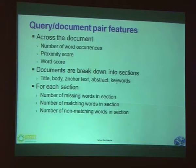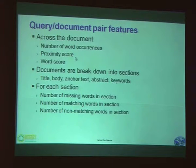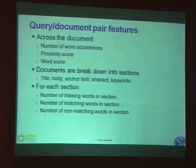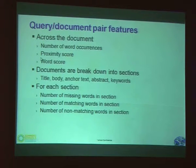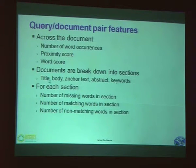Query-document pair features include, for example, features across the document given a query: the number of word occurrences for each word, the proximity score given a query and the document, and the word score. Documents have many different sections — title, body, anchor text, abstract, etc. Since title is very important, we need to compute query-document proximity across different sections, as the proximity between a query and the title is likely the most important.